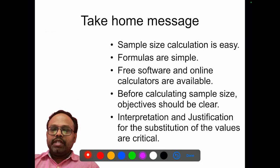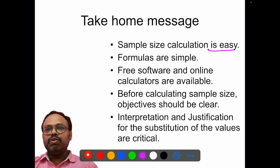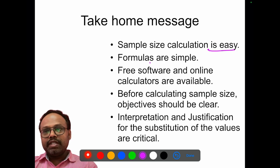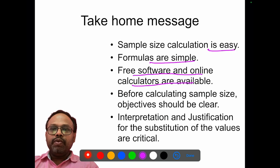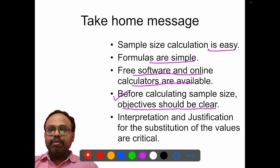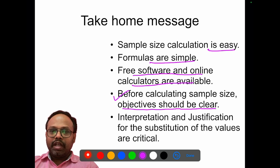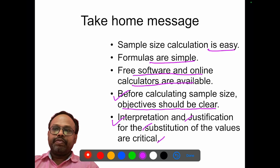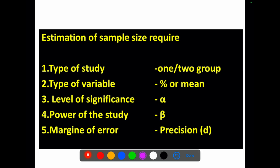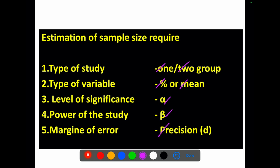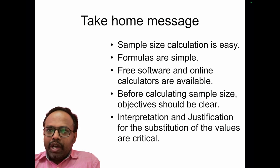Finally, the take-home message for sample size calculation: it is very easy to do if you remember the basic formulas for basic study designs. There are free software and online calculators available. But the key point is that before calculating the sample size, your objective should be clear, you should know your variable and its type, and you should be clear about the basic parameters — the type of study (one group estimation or two group comparison), proportion or mean, alpha level, beta level, and precision. Anything beyond this you can ask for help from statisticians and other field experts. Hopefully this video was useful to you.